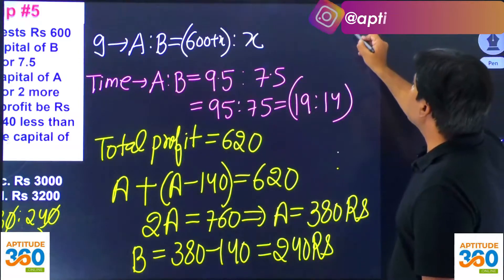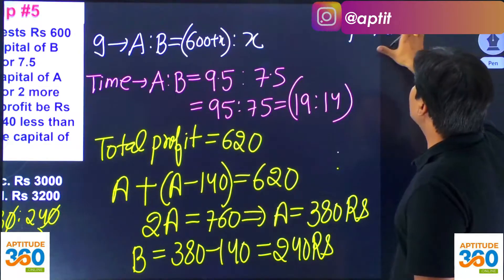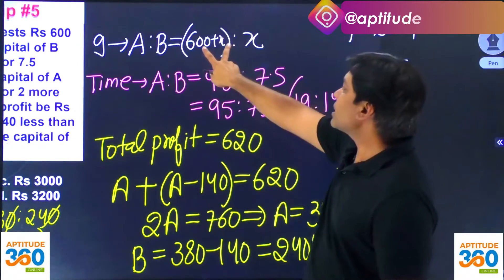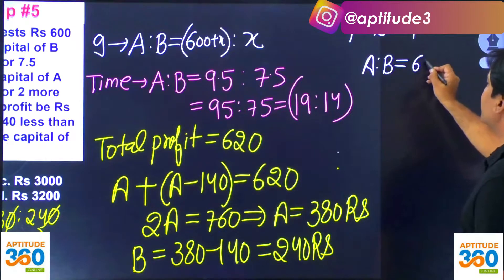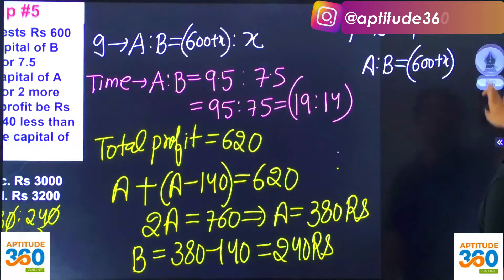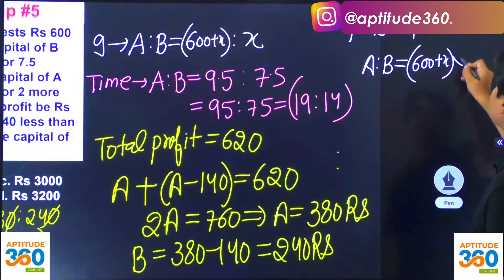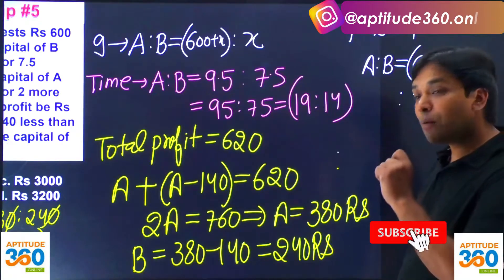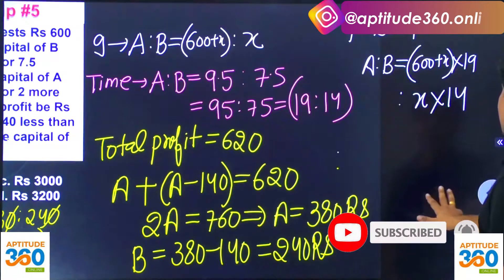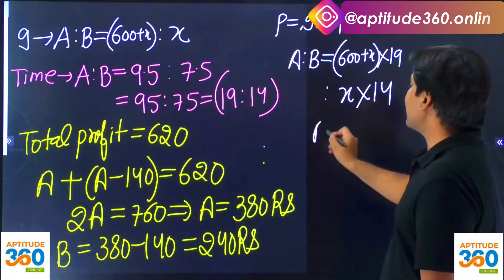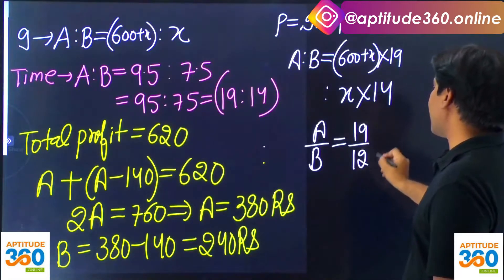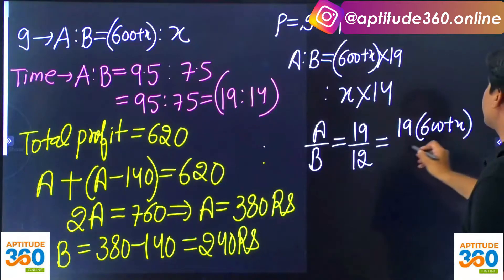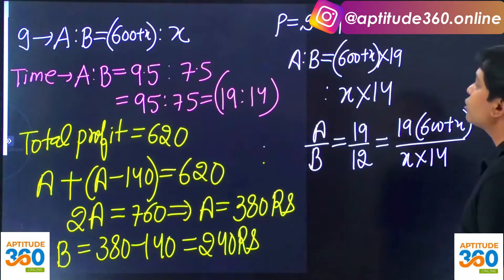To find the ratio of profit, multiply investment and time for both A and B. For A: (600 + X) × 19; for B: X × 14. Wait — this value should be 15, not 14. Let me correct that. So it is (600 + X) × 19 for A and X × 15 for B, and this ratio equals 19 to 12 as per the profit ratio.